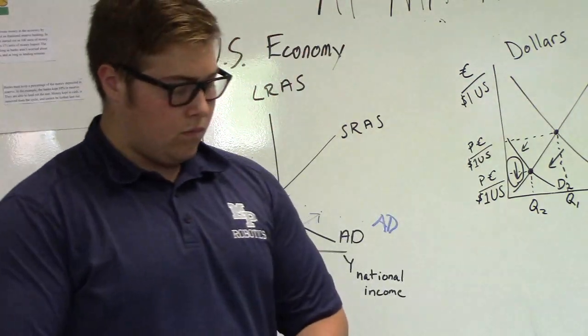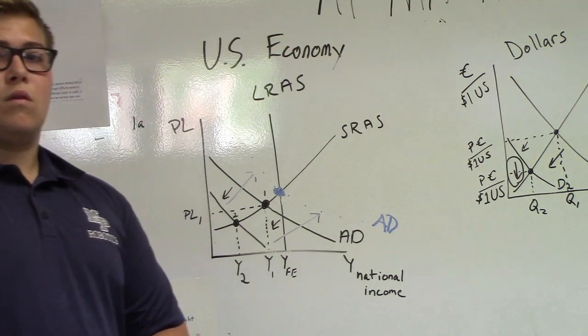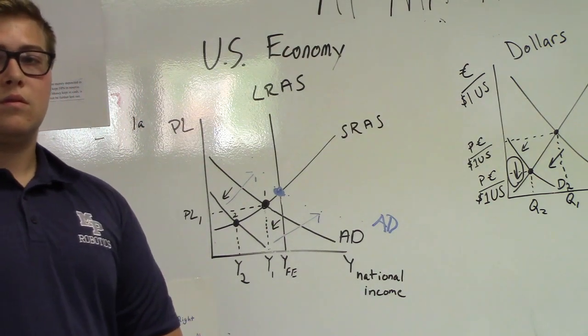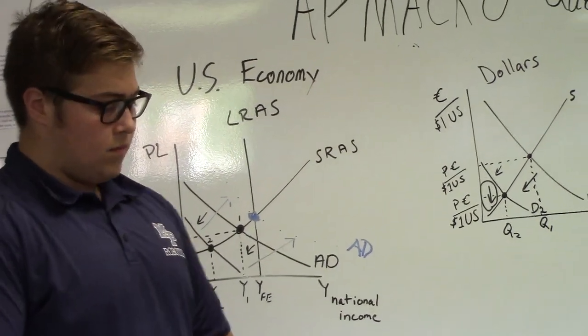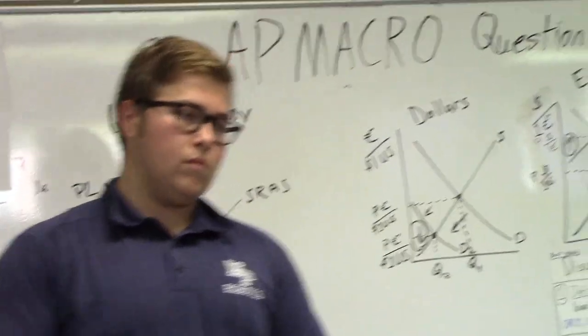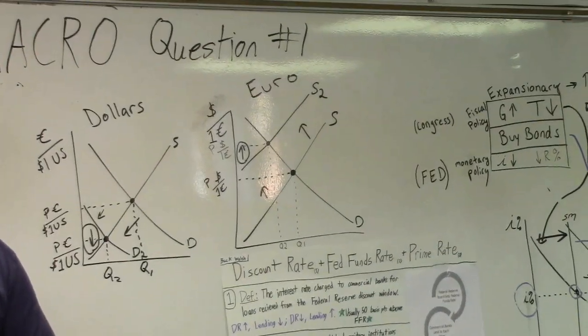Question two. Did you identify the things you had to label? Yeah, you got Y1 and PL1. Question two. Now assume the Eurozone, a major trading partner of the United States, enters into a recession. What will the effect on U.S. exports be to the Eurozone? Explain.